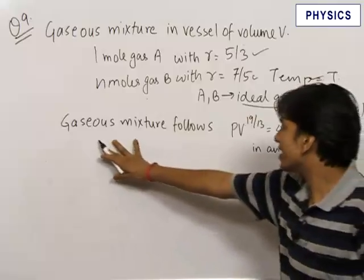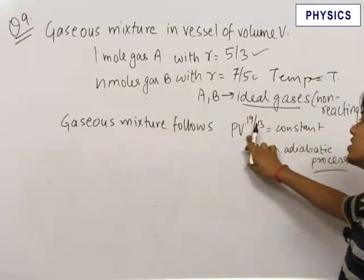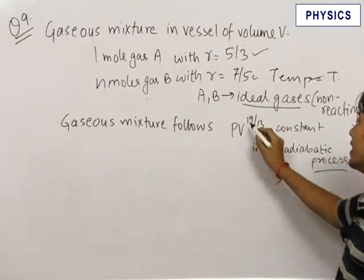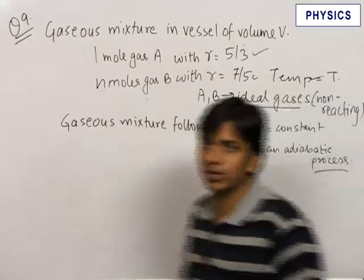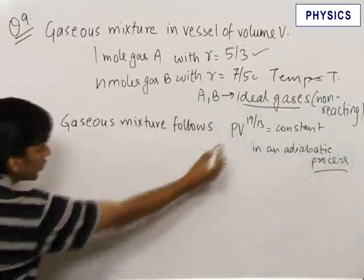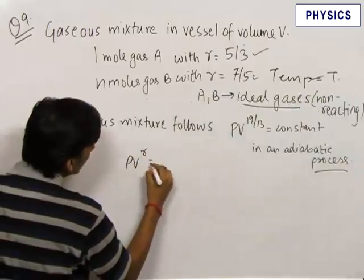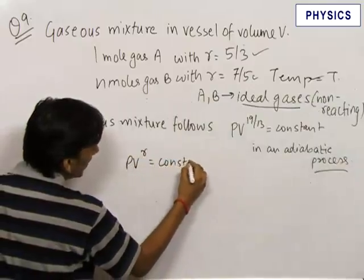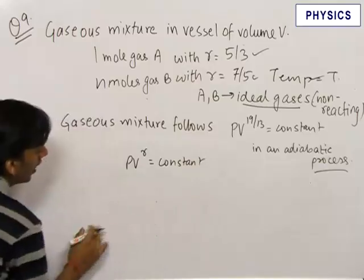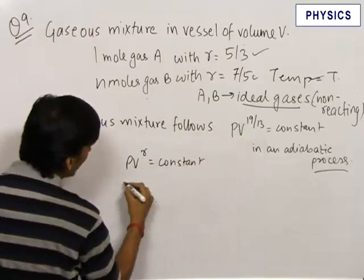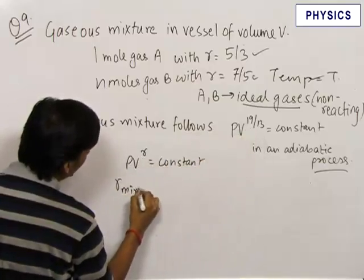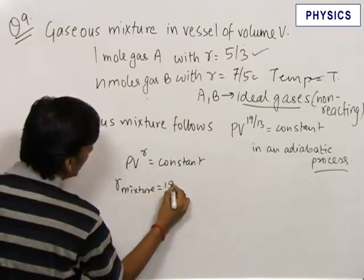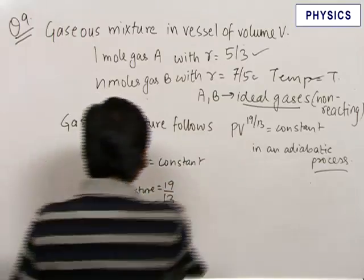The gaseous mixture follows the equation PV raised to the power 19 by 13 is equal to constant in an adiabatic process. So the first hint is PV raised to the power gamma is equal to constant is the equation for an adiabatic process. Now the gamma is given to be 19 by 13. Therefore we know that the gamma mixture is given to be equal to 19 by 13.